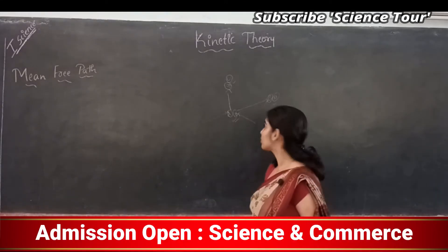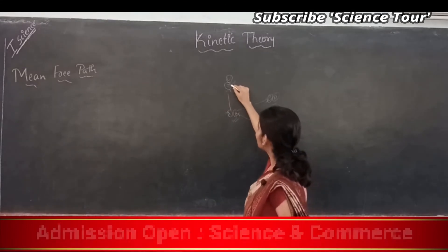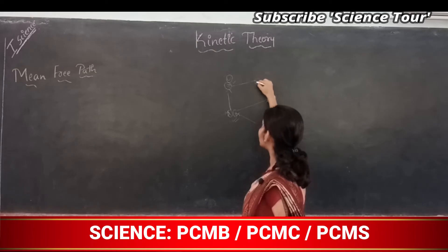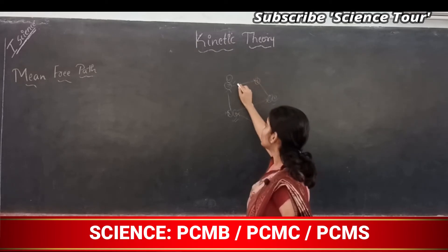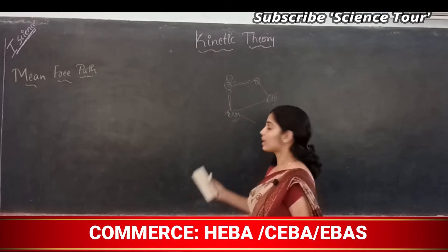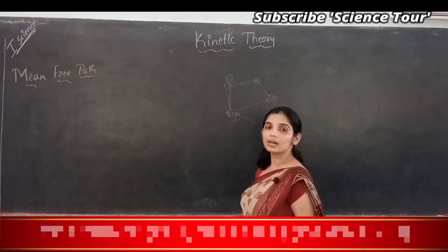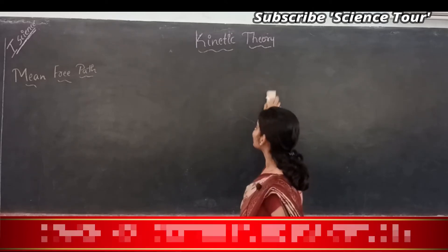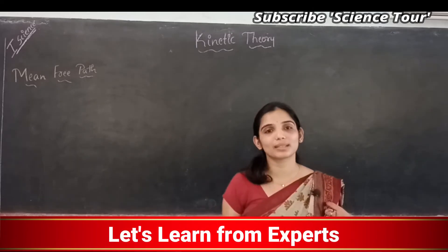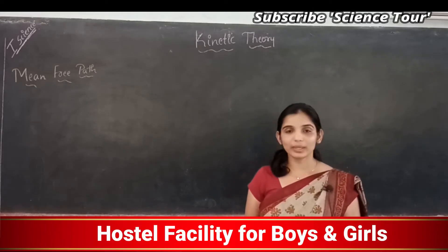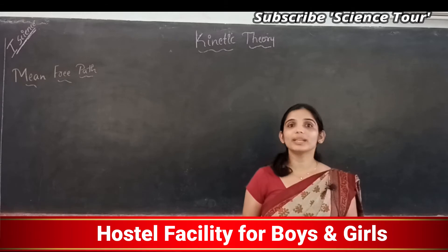A molecule will suffer different free paths for different collisions. In a classroom full of students with their eyes covered moving randomly — student A collides with B, then moves and collides with C. The distance A travels between these two successive collisions is the free path. This free path varies from collision to collision, so we calculate the average free path, which is the mean free path.